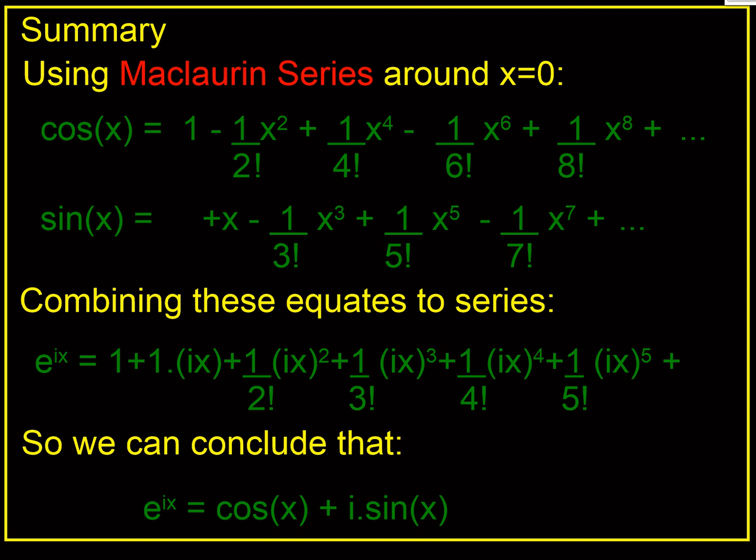So in summary, cos of x is this series we found, our sine of x is the second series here, and e to the ix is the combination of the two of those. And therefore e to the power ix is cos of x plus i sine of x in complex numbers. I hope that's of use.